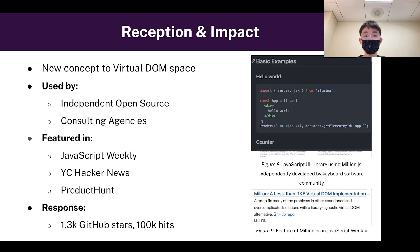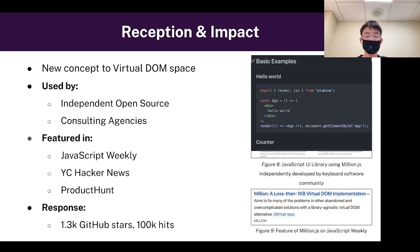Because of its exceptional performance and efficient architecture, it's being used by developers around the world. It's already being used in independent open source projects, such as the Illumina JavaScript UI library, developed by a keyboard software community, which utilizes Million.js for rendering. Various web development consulting agencies also use Million.js to create custom solutions. Million.js has been featured in major developer publications like JavaScript Weekly, YC Hacker News, and Product Hunt, receiving over 1,300 GitHub stars and 100,000 hits to the webpage — signifying overwhelming developer interest.